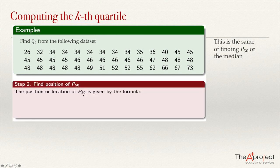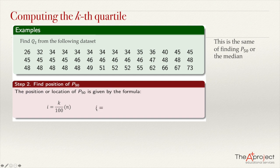So the position of the median: in this case it will be 50 over 100, which is the same as 1/2 or 0.5. N is the total number of data. Here k is 50, so 50 over 100 equals 0.50. So i equals 0.50 times 42 — n equals the number of data — so we have i = 0.50 times 42 equals 21.